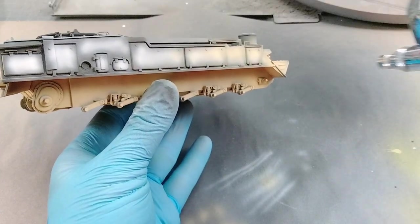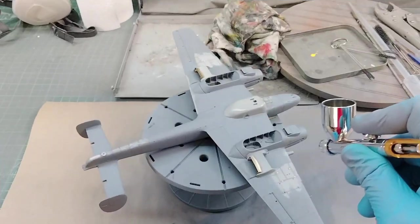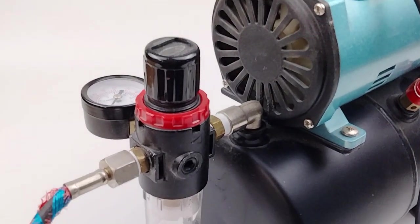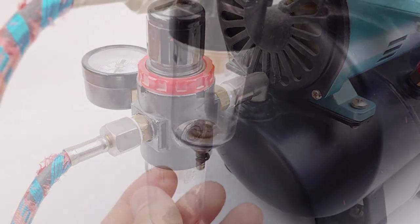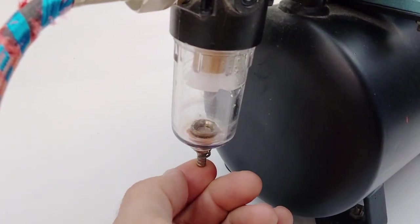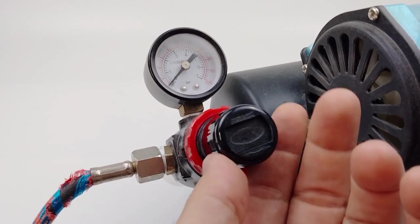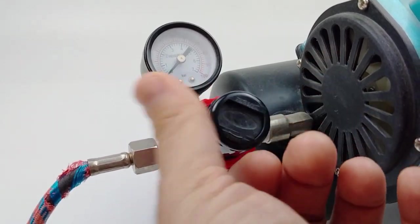No matter what setup you decide to go for your air compressor, there are two components there are going to be necessary for all airbrushing tasks. The first piece is a water trap. This is going to make sure that your air is clean and water-free so you don't get any contamination when you're airbrushing. The other piece is a valve so that you can control your psi, since most airbrushing for scale modelers don't usually go above 30 psi.